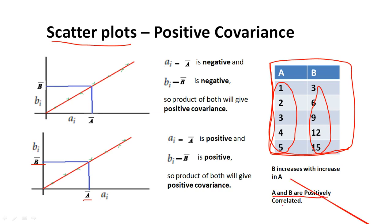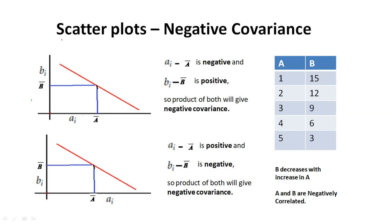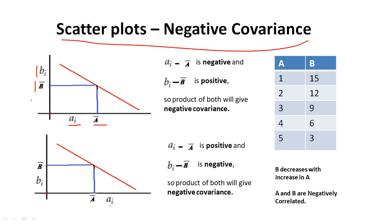Therefore, A and B are positively correlated. Now let's see negative covariance using scatter plots. In this example, B decreases with an increase in A. Here, we select a_i and b_i such that either one is less than its mean and the other is greater — for example, a_i is less than a-bar and b_i is greater than b-bar, or a_i is greater than a-bar and b_i is less than b-bar. In both cases, one value is positive and the other is negative, so their product gives negative covariance.